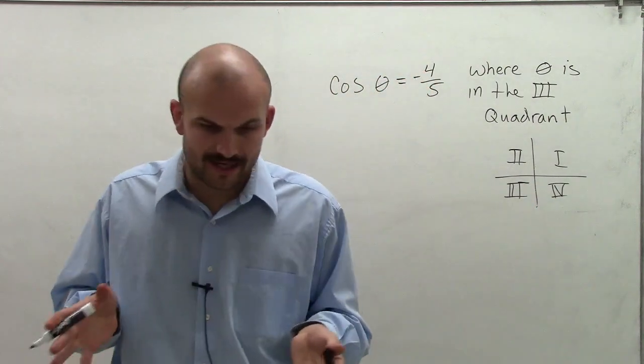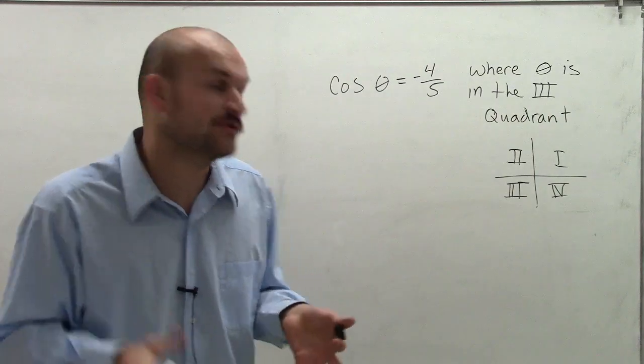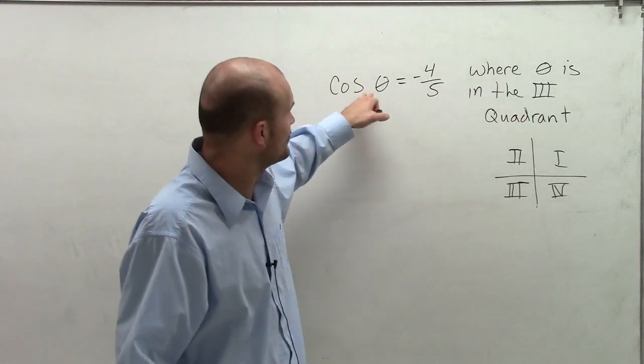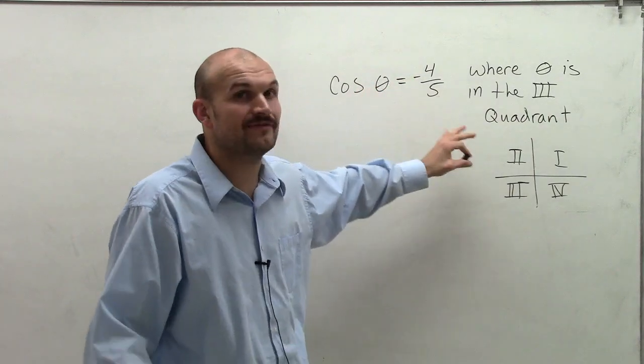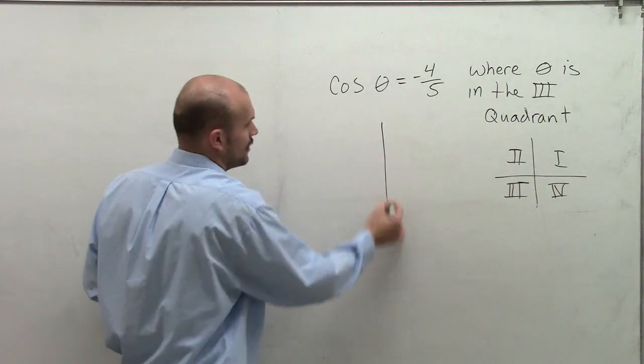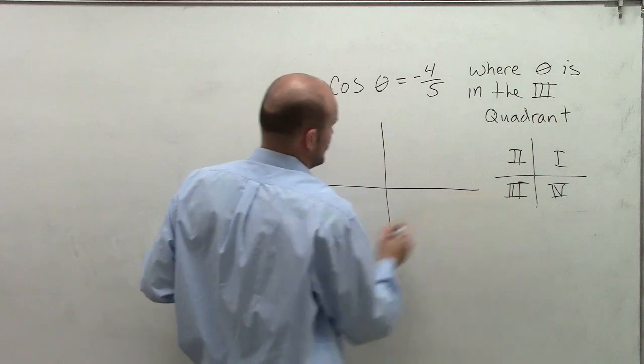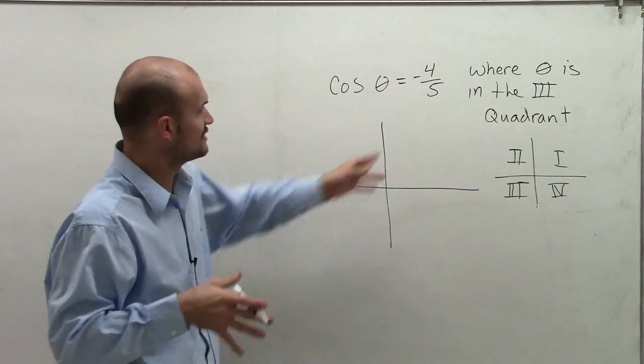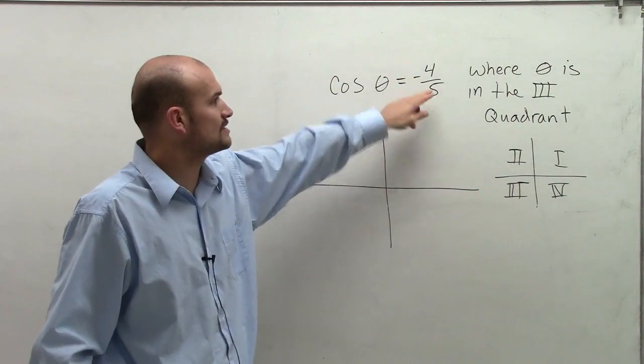Therefore, I know my theta is going to be in the third quadrant. And this is very important because when we have cosine of theta equals negative 4 over 5, there could be multiple different quadrants my angle could be in. So when looking at this, it just says cosine of theta equals negative 4 over 5.